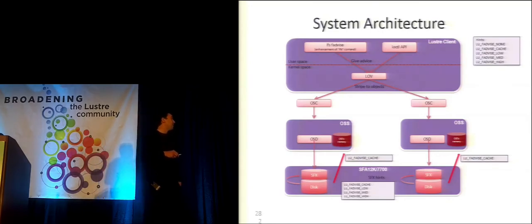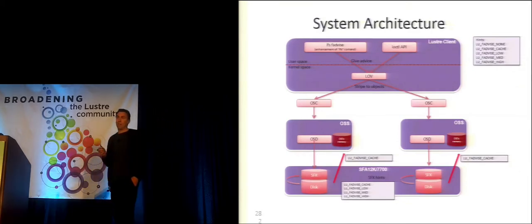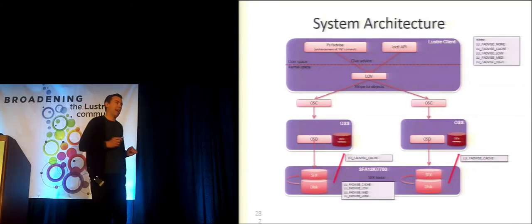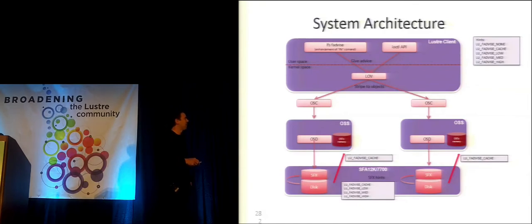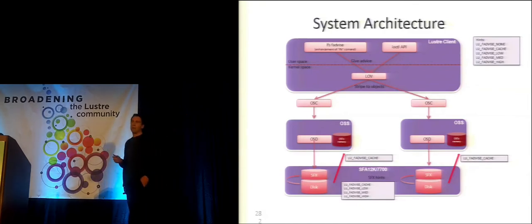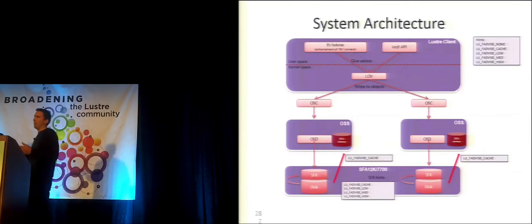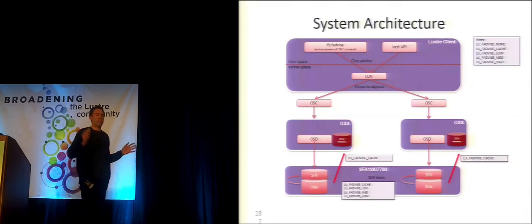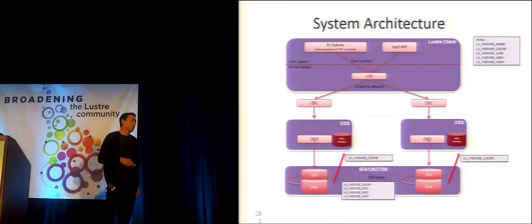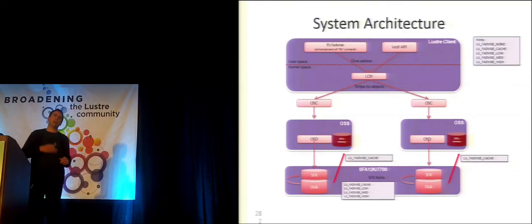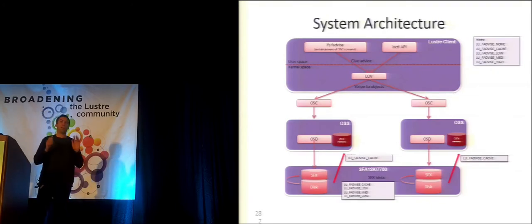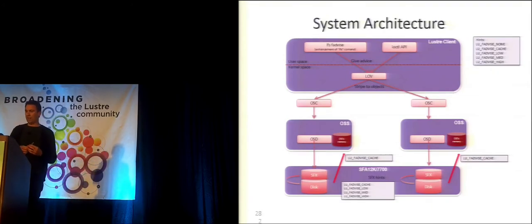When you use FAdvise, there are various hints you can give the system. You can say do nothing, or you can say LFS FAdvise cache — which moves those blocks into OSS memory. There are three other hints: low, medium, and high, which correspond to priorities within our SSD cache. If you move data into the SSD cache with high priority, it tends to stay there for a long time and not get pushed out by the LRU algorithm, unless there's a lot of other high-priority data in that same SFX cache.